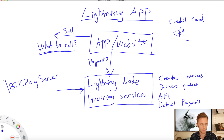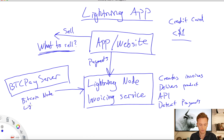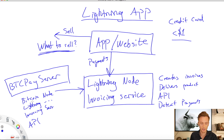That solution is called BTCPay Server. I'm not affiliated with this — it's an open source project. BTCPay Server gives you all of this in just one simple-to-install package. It will give you a Bitcoin full node, a Lightning node, and an invoicing service, and it wraps all of this in an easy-to-use API. It all comes in a pre-packaged way that you can deploy on Azure, on AWS, or on your own server at home.